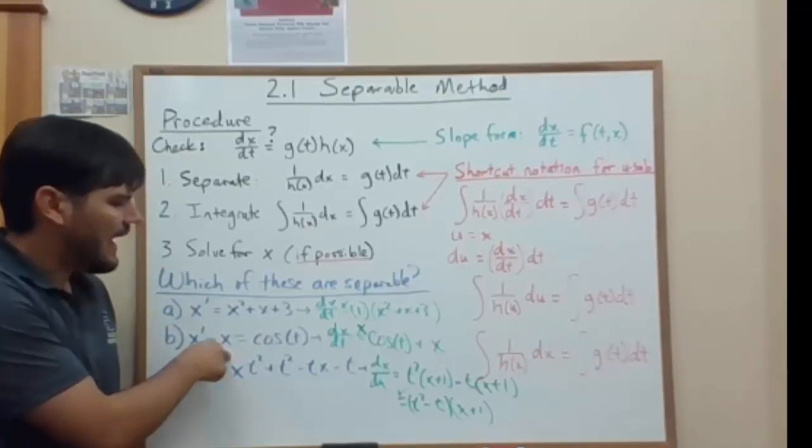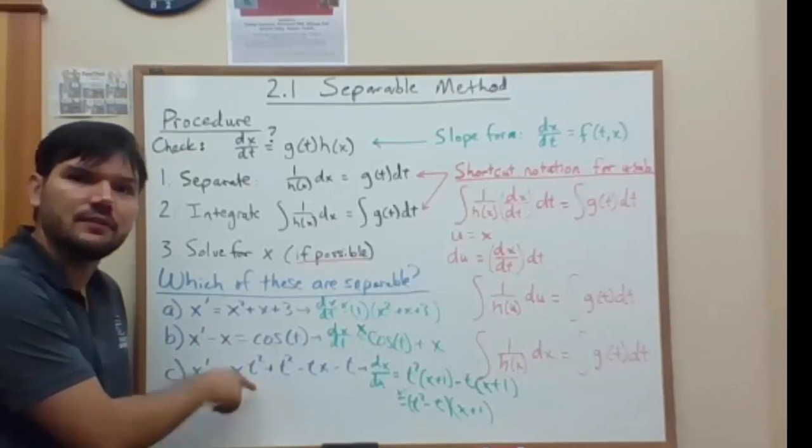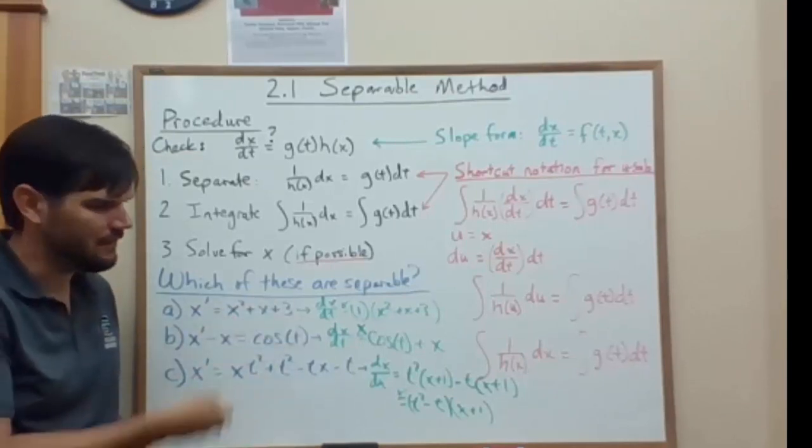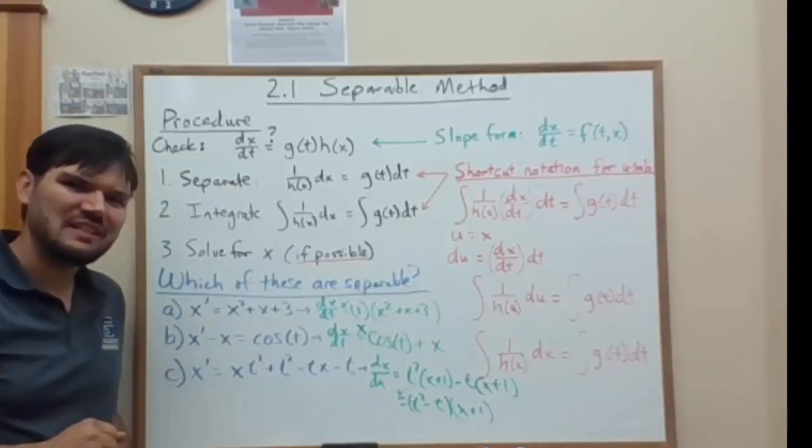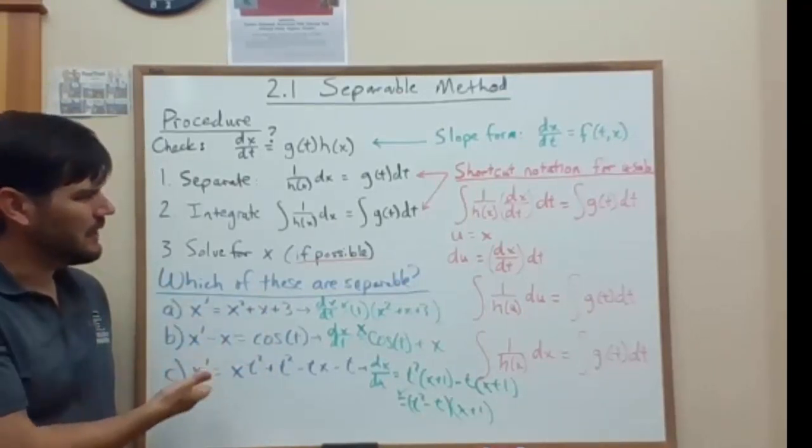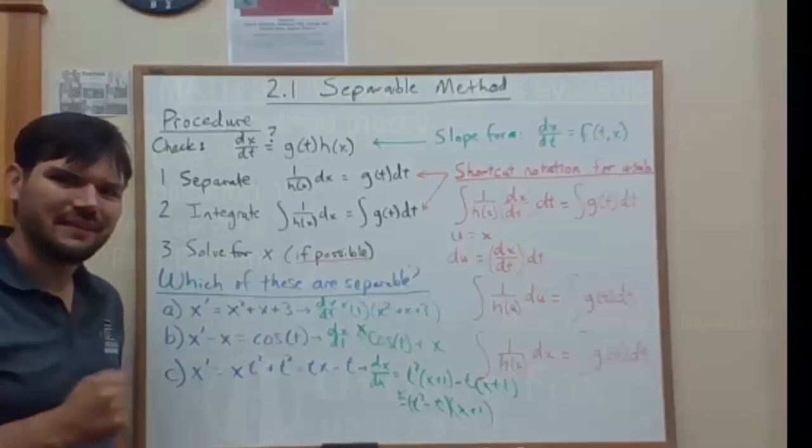Make sure you write it in slope form, like in the case of this one. And keep trying to see if you can pull it apart to factor it into a function of t and a function of x. Next up, we'll try some examples to solve with this separable method.